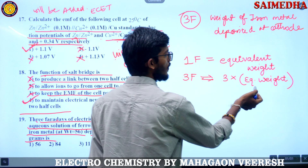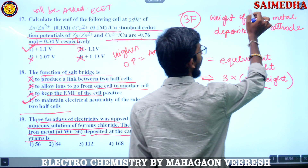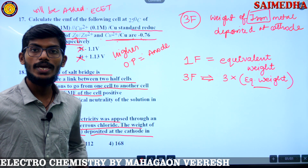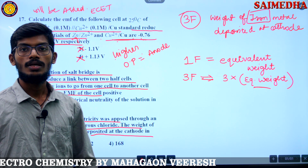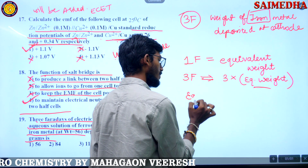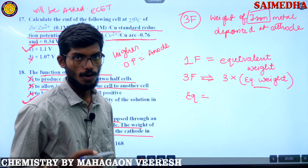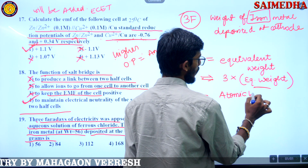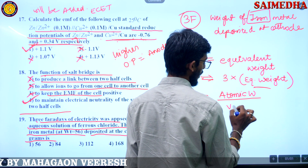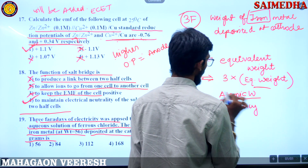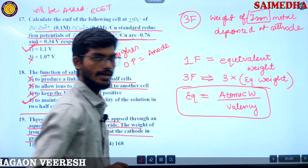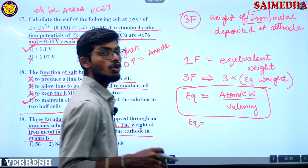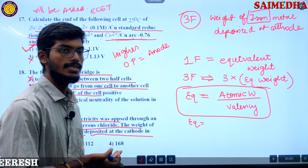Now we need the equivalent weight of iron. Equivalent weight = atomic weight divided by valency. The atomic weight of iron is 56 — already given in the question, but you must remember it even if not given.